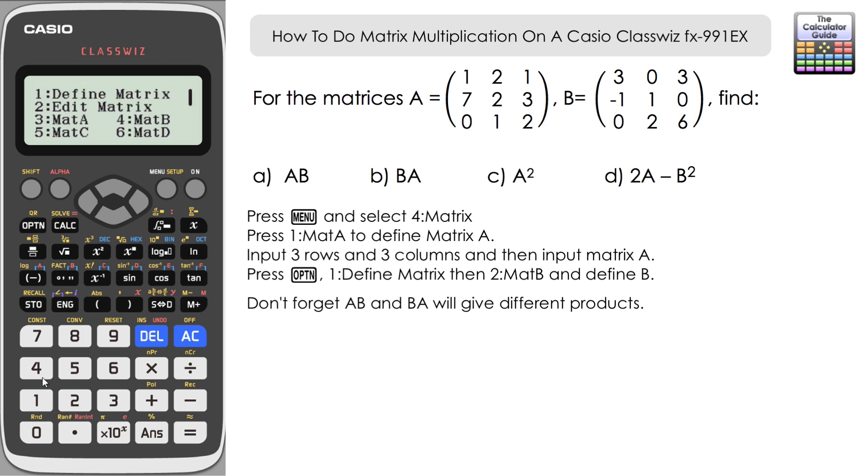And then the other way round, which will give a different result, matrix B times matrix A will give us this result here.